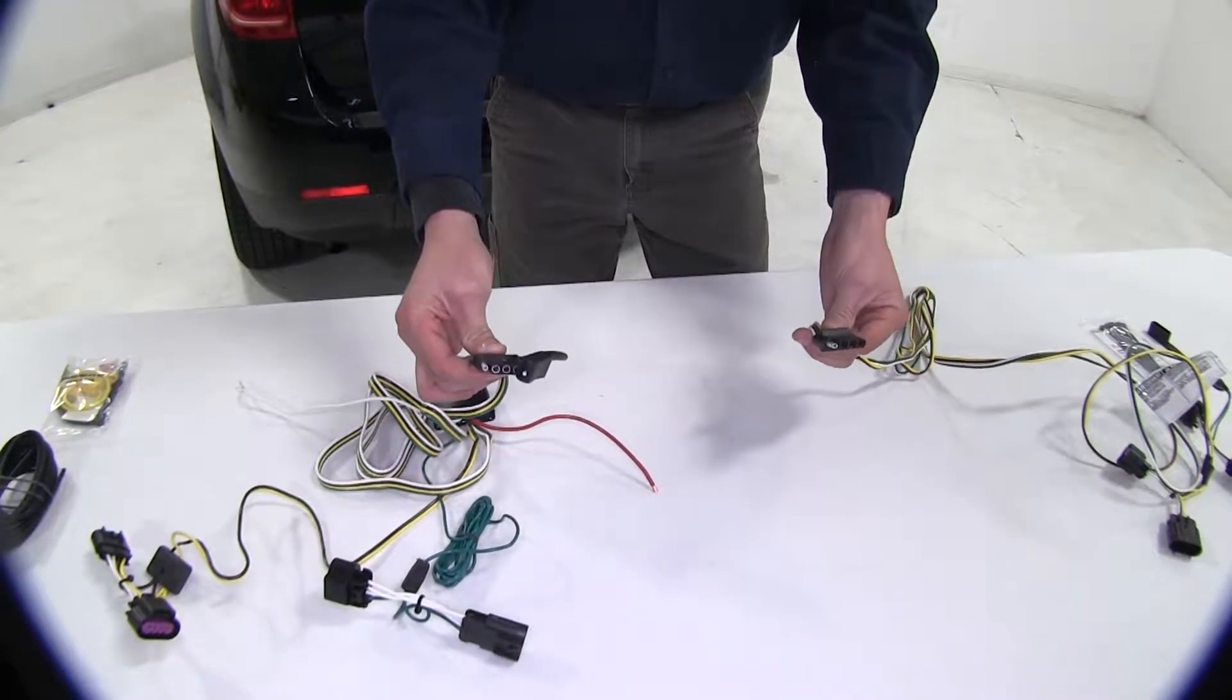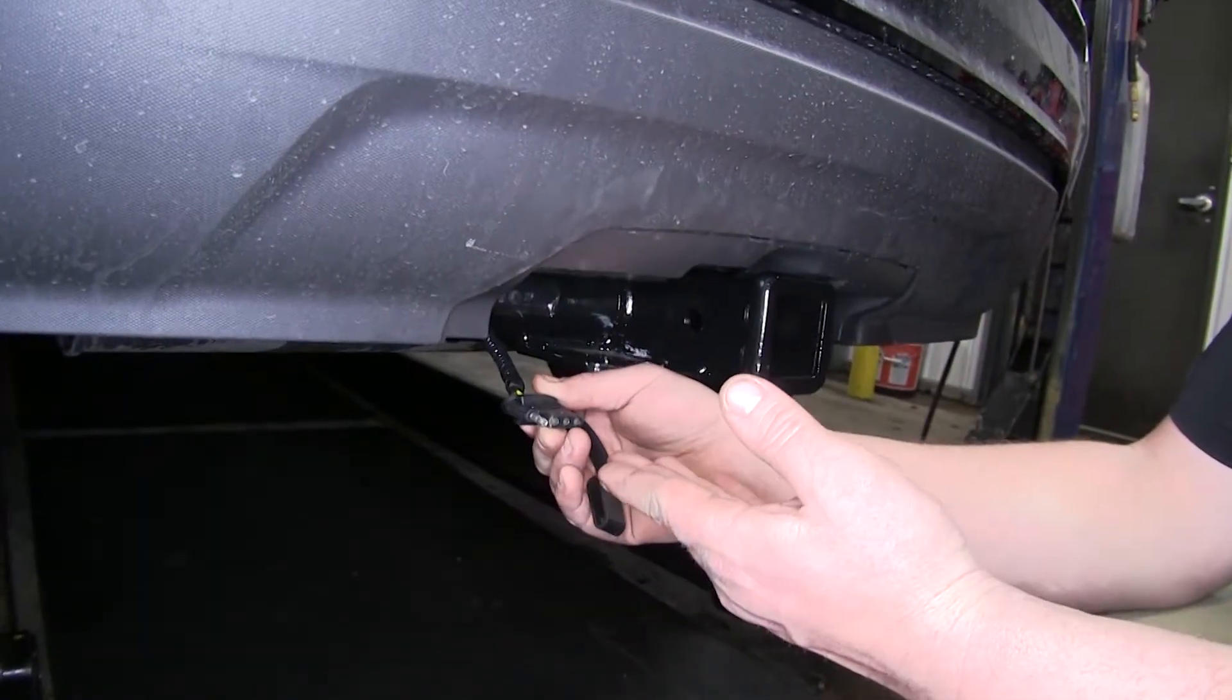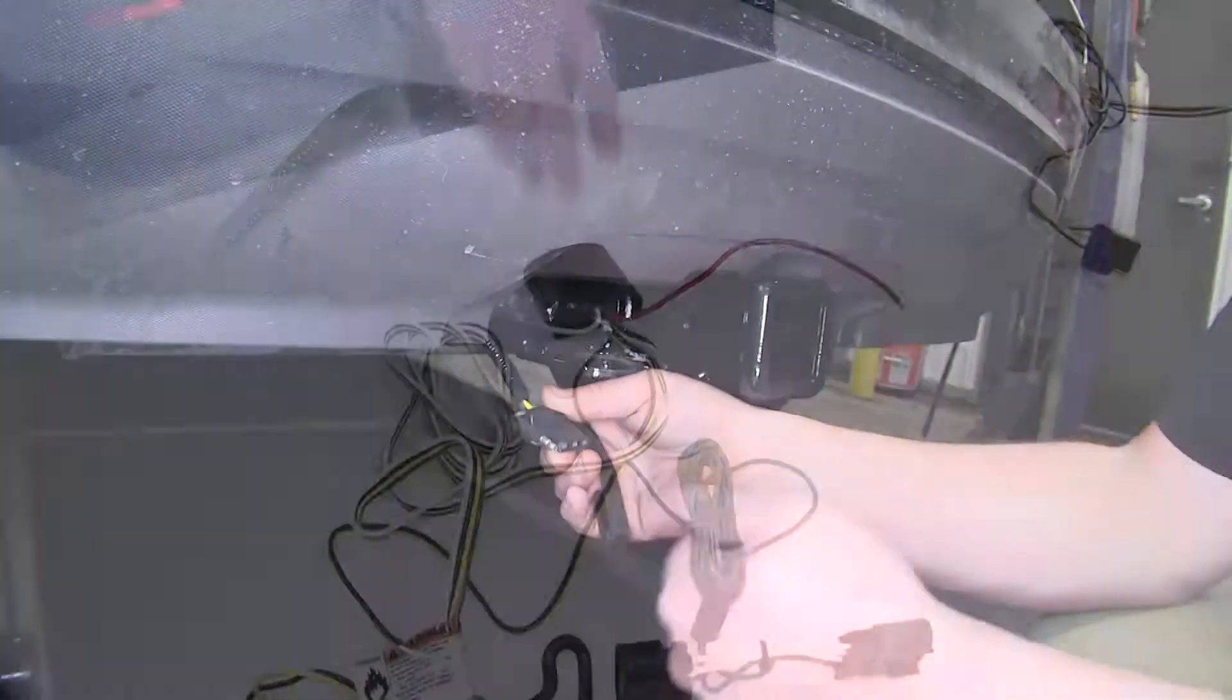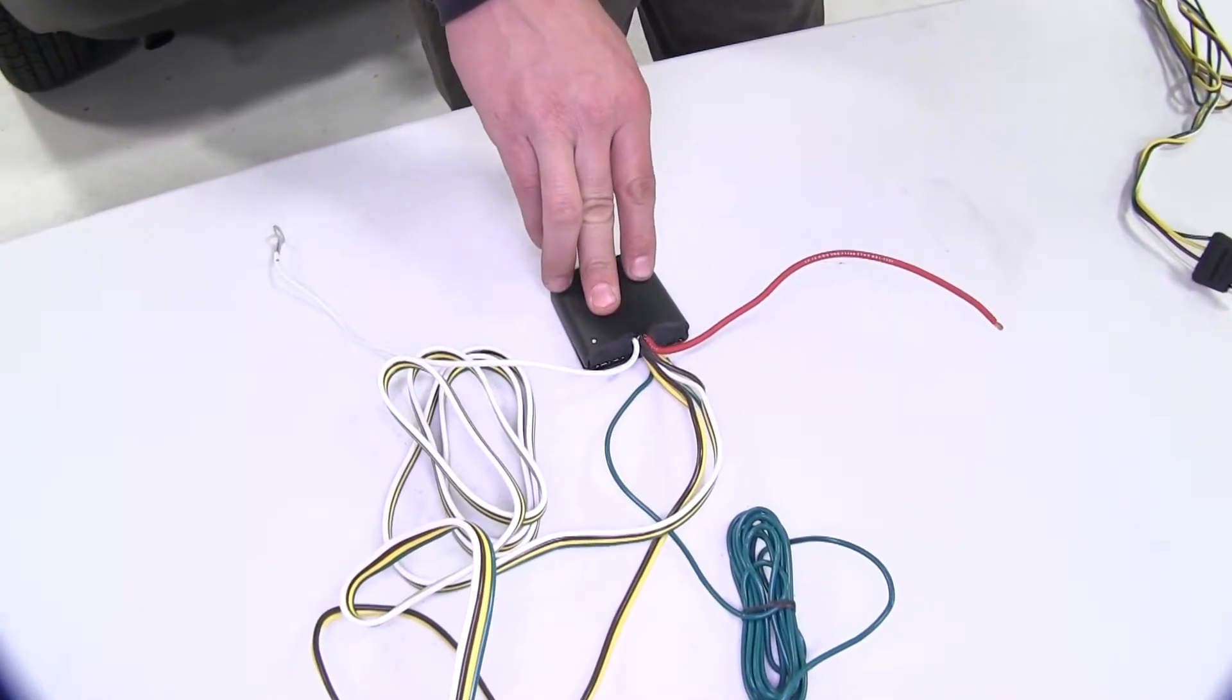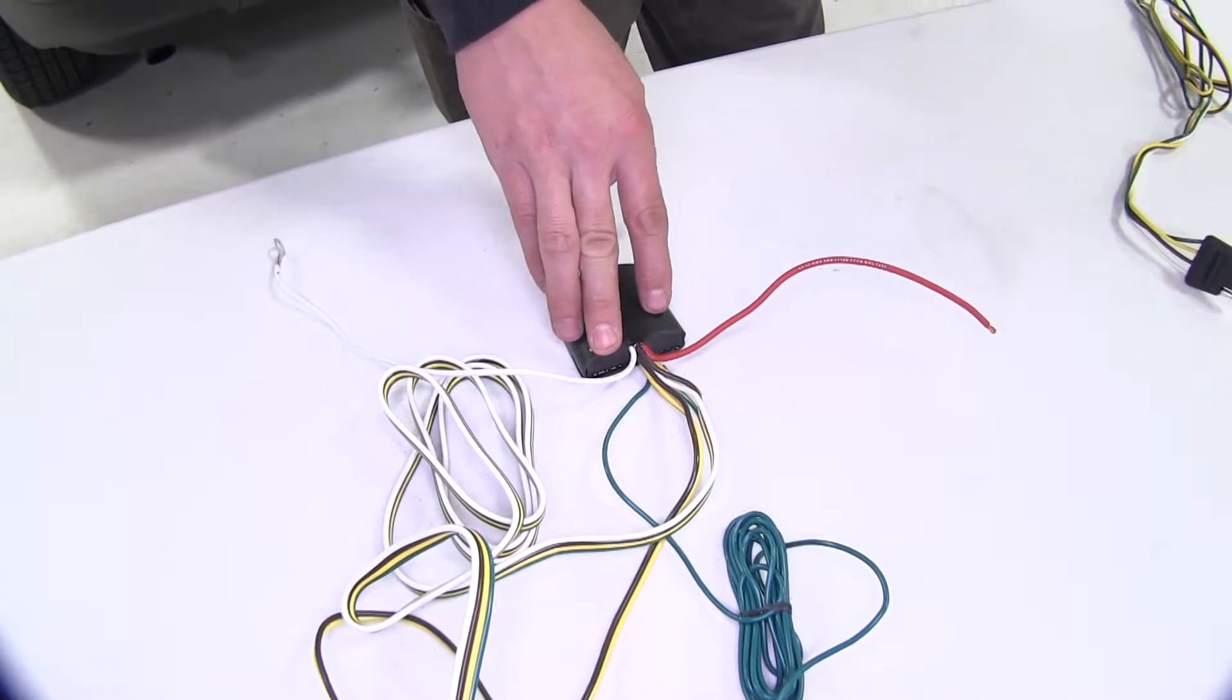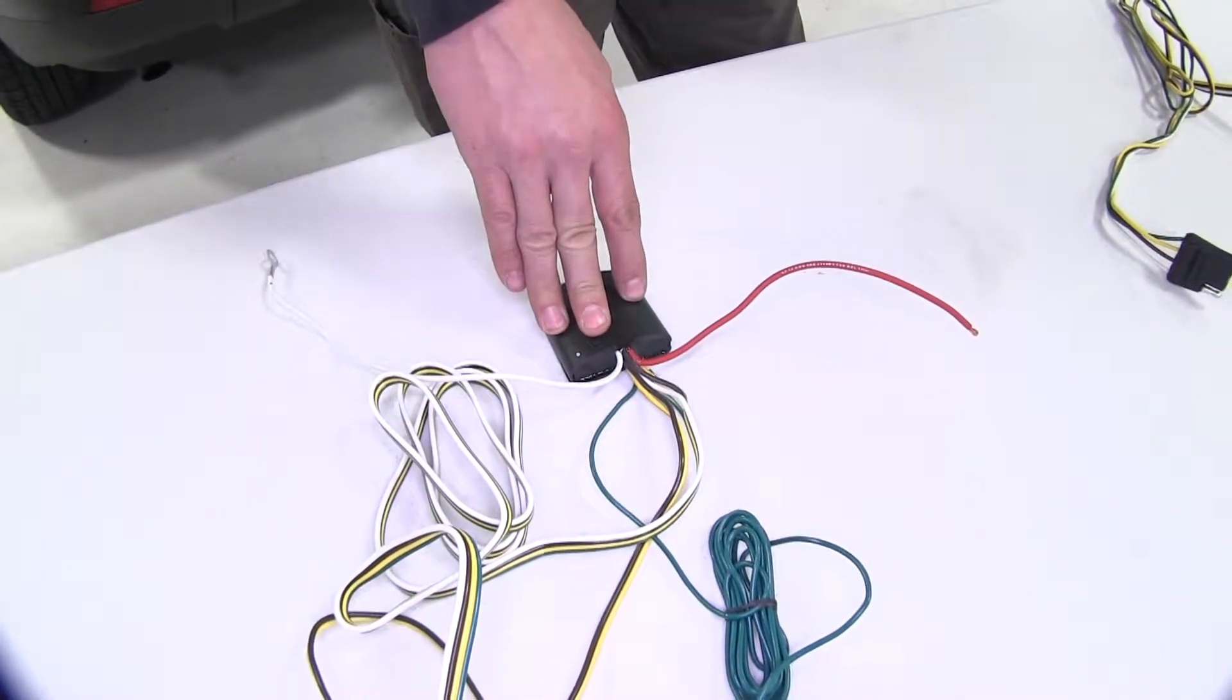Both are going to provide you with a four-pole flat connector for your trailer wiring at the rear of your vehicle. The main difference between the wiring harnesses is the Tekonsha here uses a power module. What this does is it connects directly to the battery, copies the signal to your trailer wiring, and prevents overloading your car's electrical system.